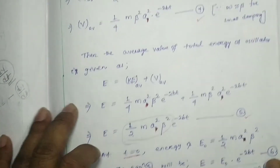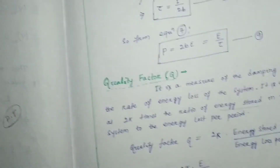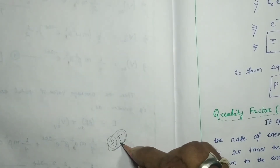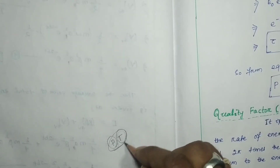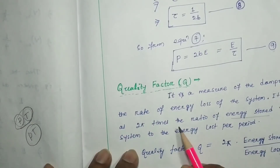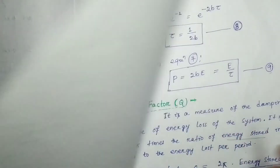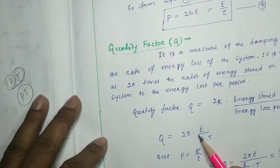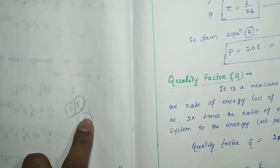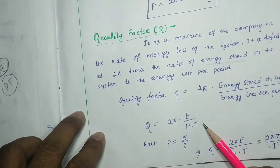From the last class, the energy lost per second is P = 2BE. So the energy lost per period T is P·T. The quality factor is therefore Q = 2π × (energy stored E) / (energy lost per period P·T), which gives Q = 2πE / (P·T).